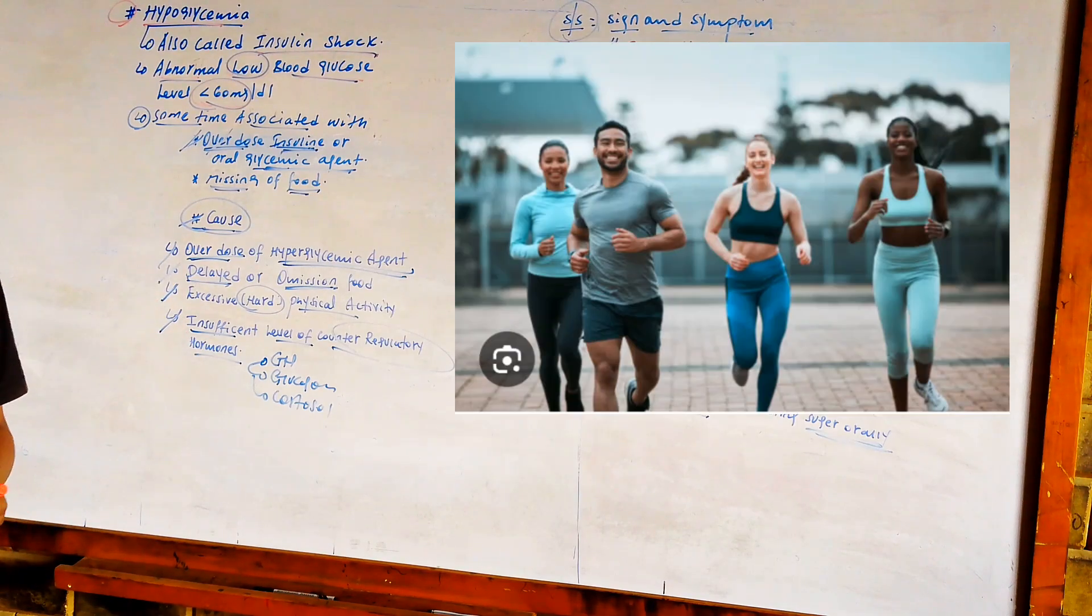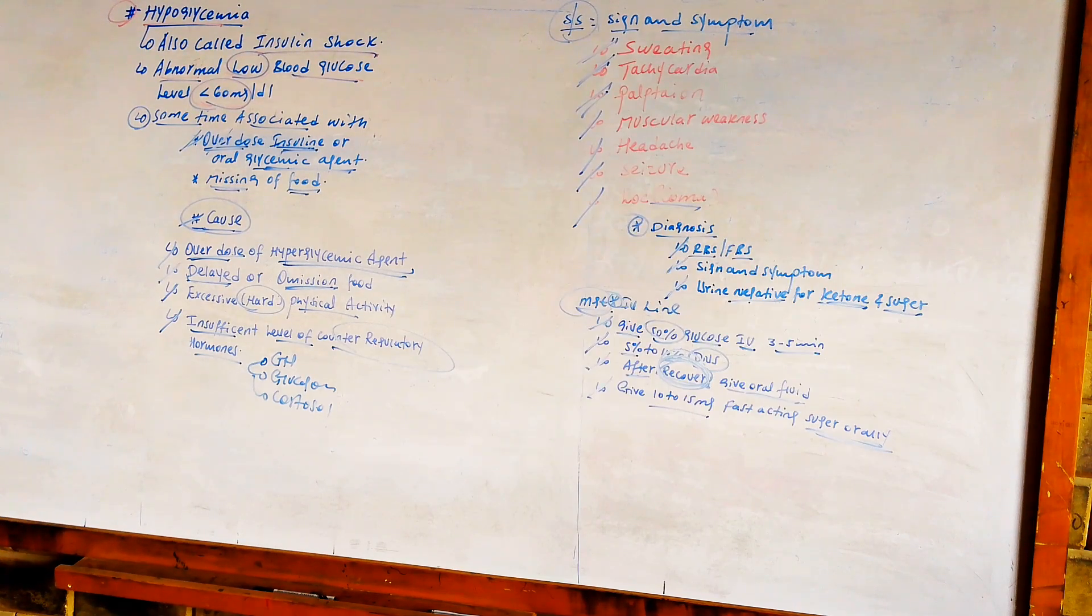Excessive hard physical activity also causes hypoglycemia. Hard physical activity increases the use of blood glucose through exercise. When you're exhausted, you can develop hypoglycemia.